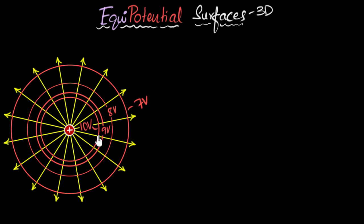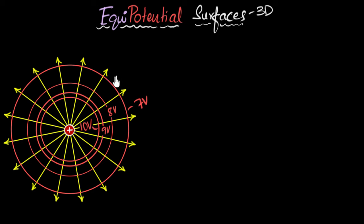Now before we continue, you may immediately notice that the surfaces are closer here and they're going farther and farther away. Why is that? Well, it has something to do with the strength of the electric field. Close to the charge, the field is very strong, and that's where the equipotential surfaces will be closer to each other. As we go far away from the charge, the field weakens, and so the surfaces go farther and farther away from each other.